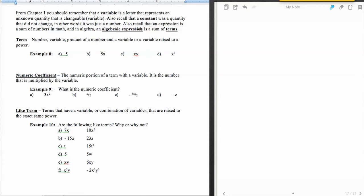Also recall that a constant was a quantity that did not change. In other words, it's just a number. And also recall that an expression is a sum of numbers, and an algebraic expression is a sum of terms.